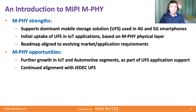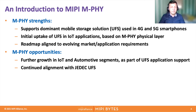Amphi has a few strengths, and there are also future opportunities. For strengths, Amphi is the dominant mobile interface used for storage — JEDEC UFS. It is dominant in high-end 4G and 5G smartphones. It is also getting introduced in IoT applications that use UFS with Amphi as its physical layer. For opportunities, there is possible growth in further IoT expansion and automotive segment expansion as part of the continuous usage of the UFS application and its integration in those segments.